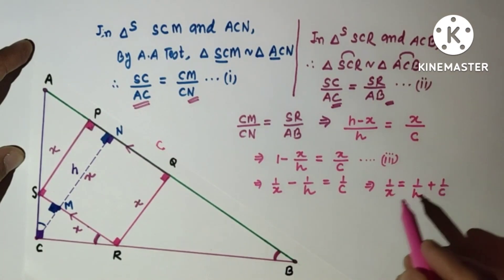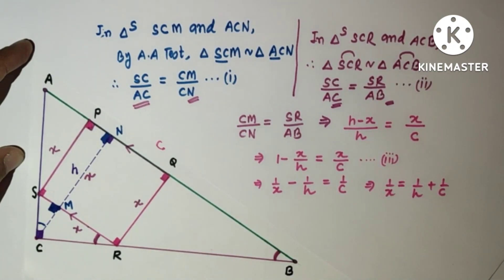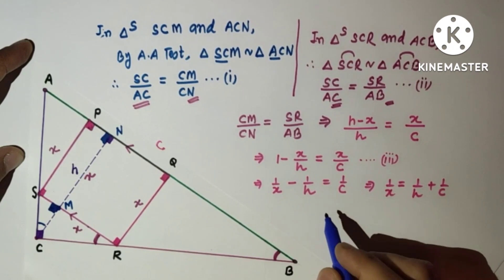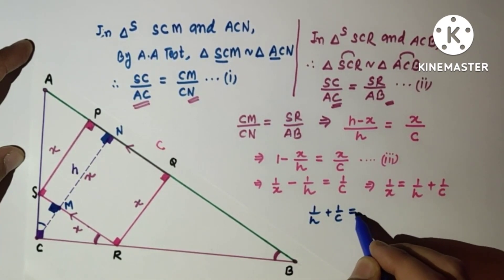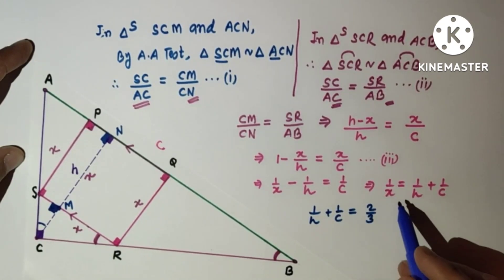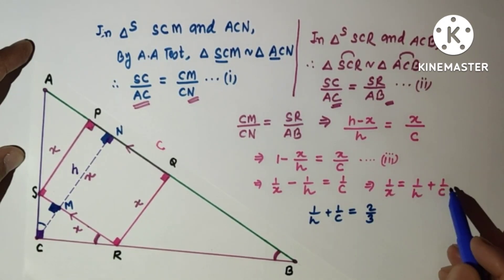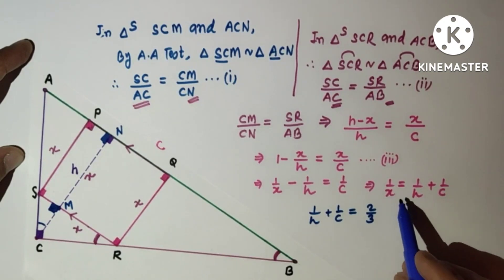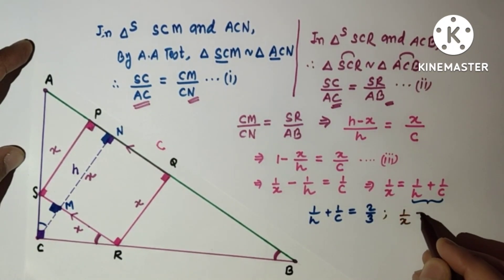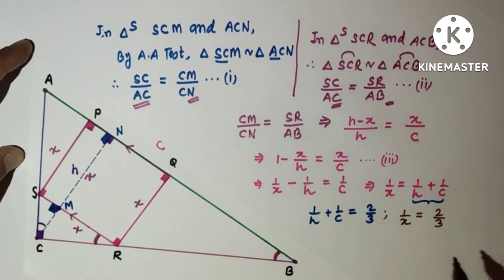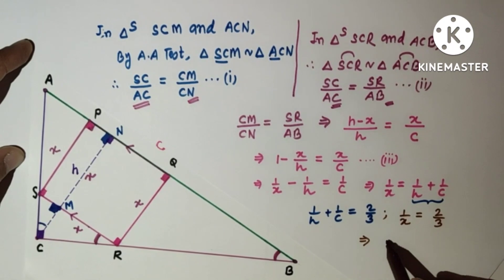We are given in the question that 1/h + 1/c = 2/3. Therefore, substituting this, 1/x = 2/3, which means x = 3/2.